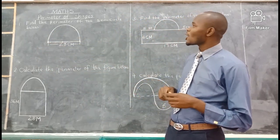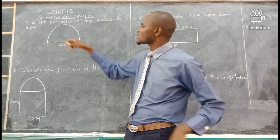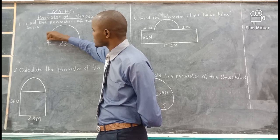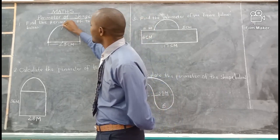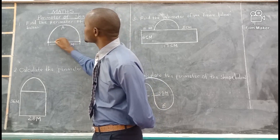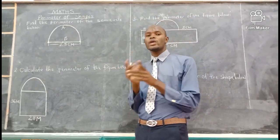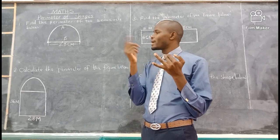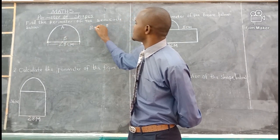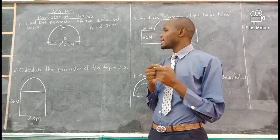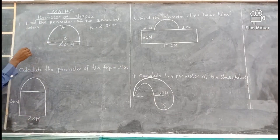Example one: find the perimeter of the semicircle below. You need to ask yourself how many lines are we going to add to go back to where we started. From this point, the first line is the semicircle — you can call it A. From there you go back to where you started, and you call this line B. To get the perimeter of this semicircle, we only add two lines: the curved one (A) plus the diameter (B). The measurement for B is 2.8 centimeters. The only length we need to calculate is the curved distance.